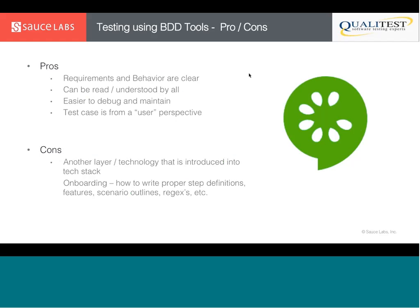The pros and cons of BDD: requirements and behaviors are clear — when you write the test case, you know exactly what it's doing and what the expected behavior should be. It can be read and understood by all, which you'll see when we look at the Cucumber test case. It's really easy to debug and maintain these test cases as well, because when something goes wrong, it maps directly to a line of some behavior or action.